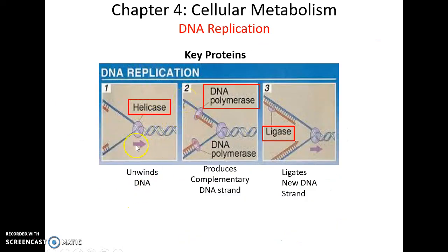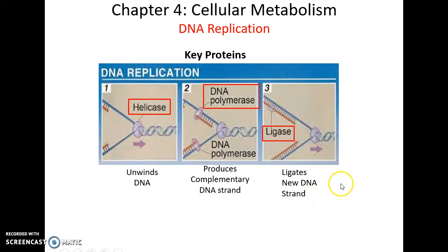Some important proteins in DNA replication: helicase unwinds the DNA into its two strands. DNA polymerase is the enzyme complex that produces the new DNA strand using the old strand as a template. Ligase comes in to fill any breaks to make the DNA strand one long continuous strand.